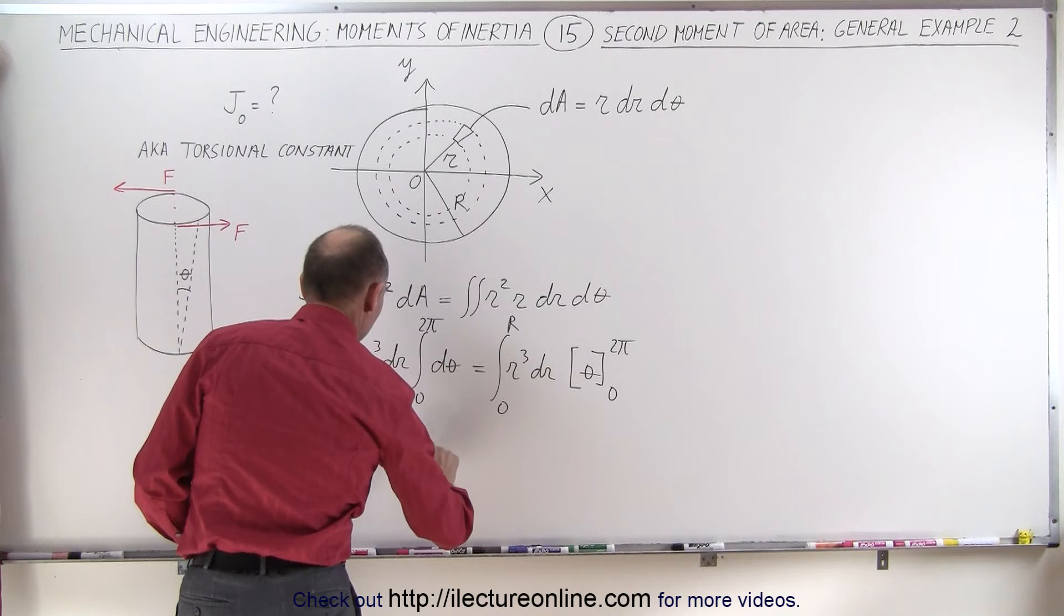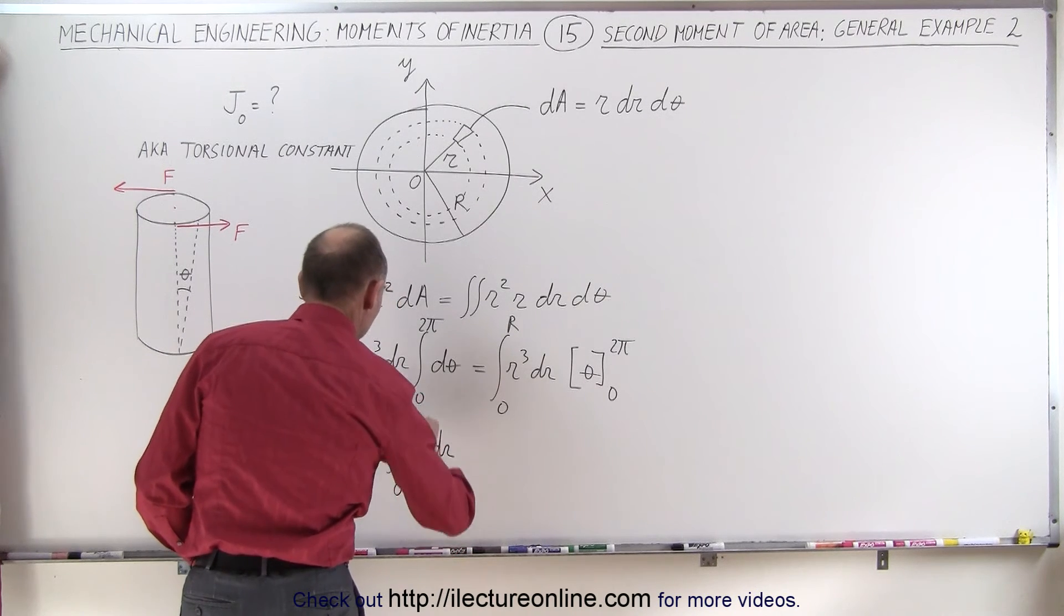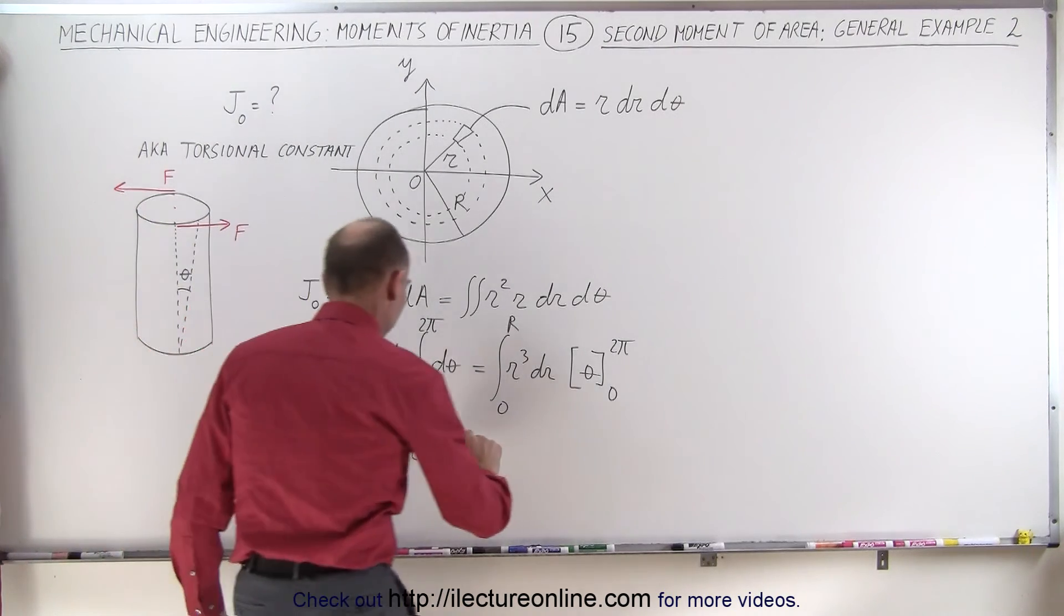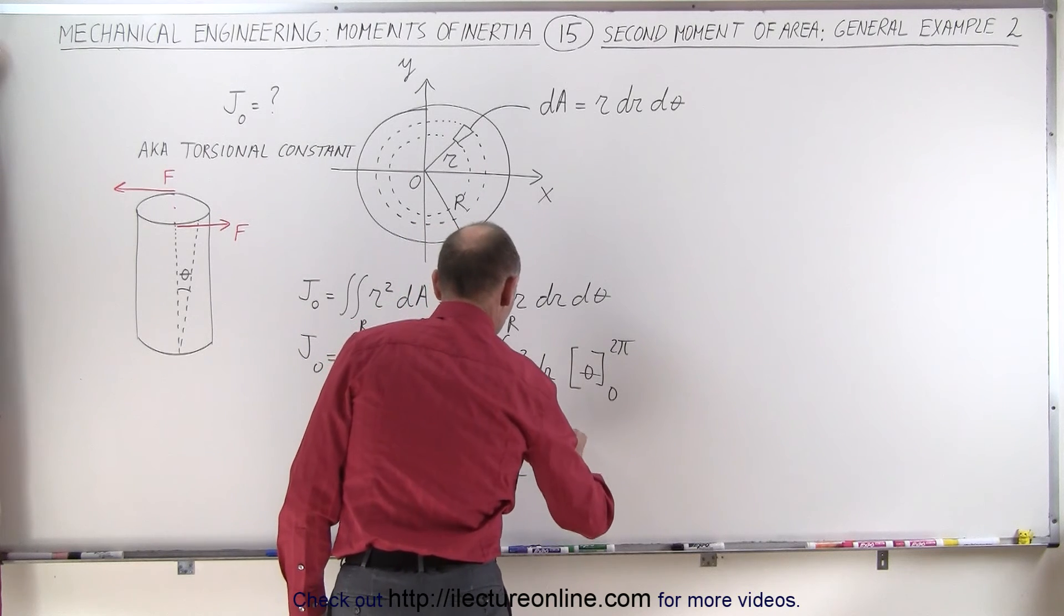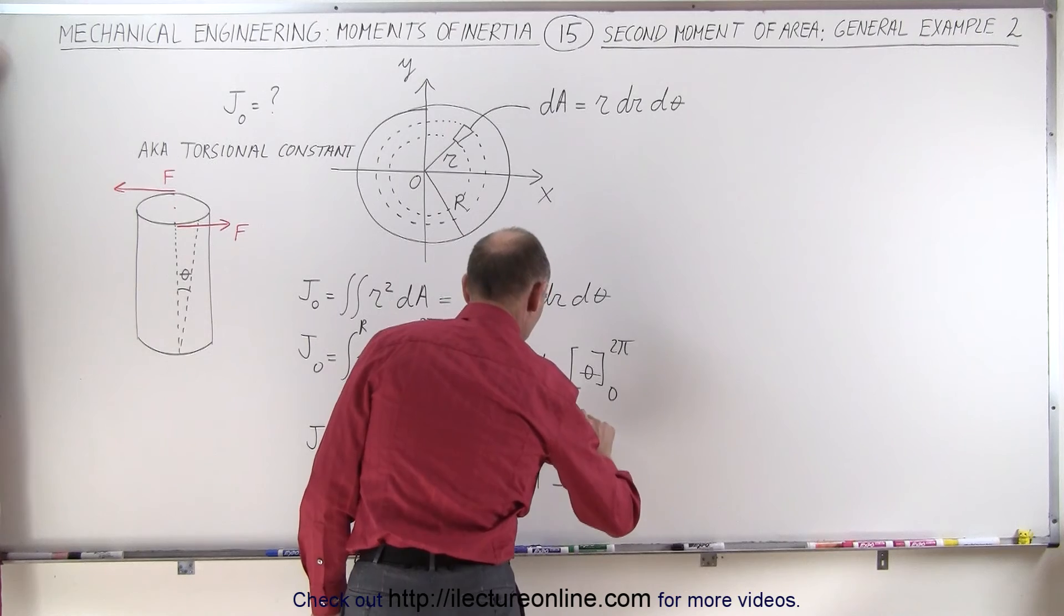the integral of r cubed times dr from zero to r. And that's also a fairly easy integral. So this is equal to two pi times r to the fourth power divided by four, evaluated from zero to r.